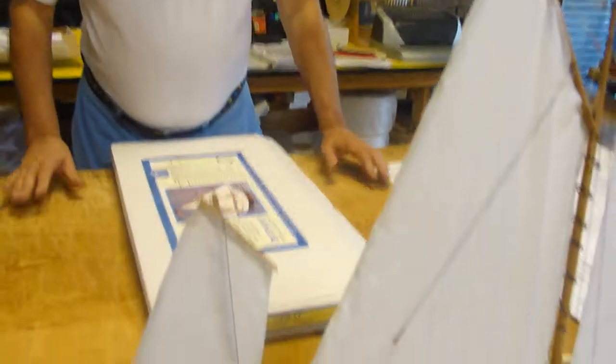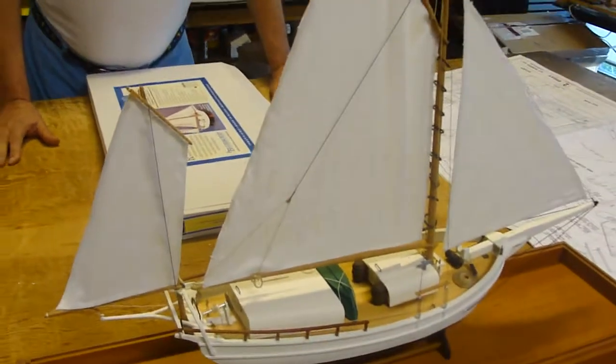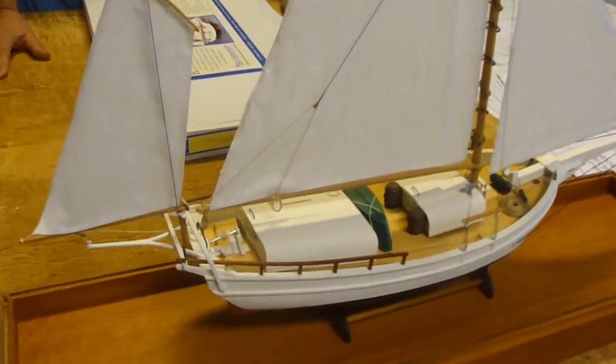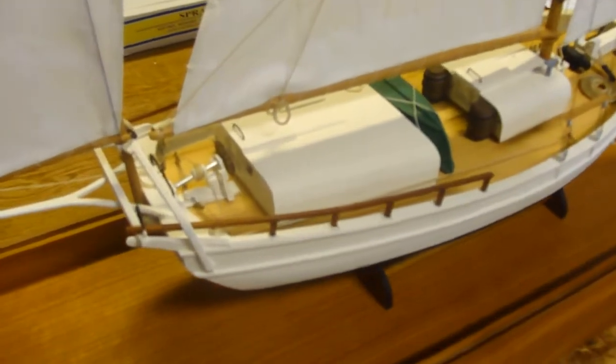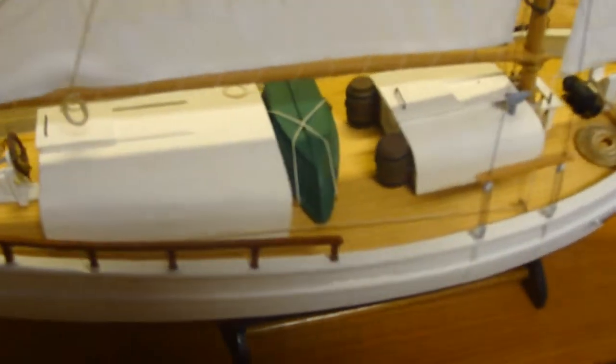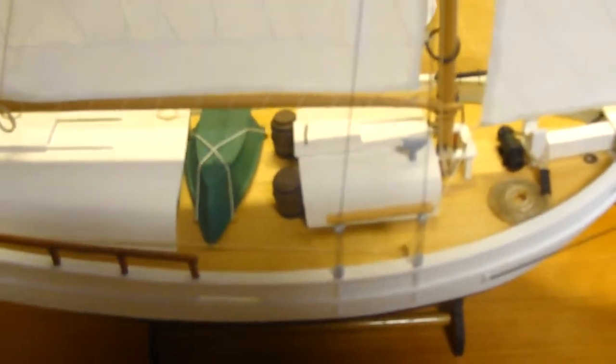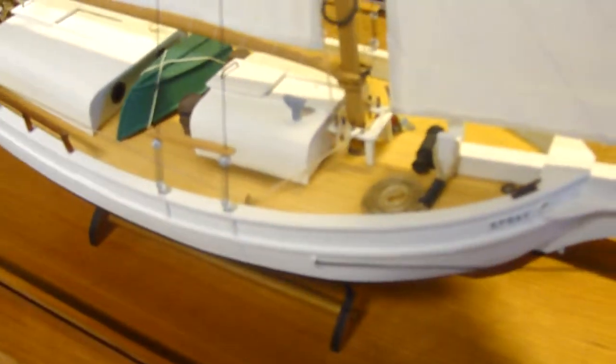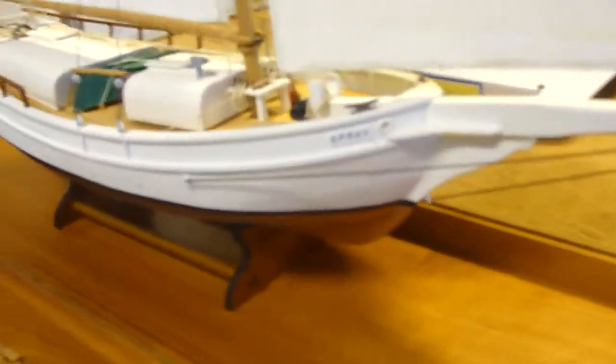This was the very first boat to circumnavigate the globe single-handedly. Joshua Slocum did this in 1895 to 1898 all by himself. And by the way, that was about 10 years before even radio had been invented.